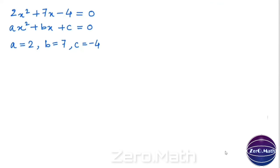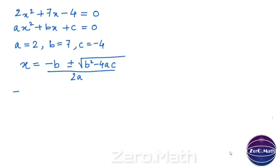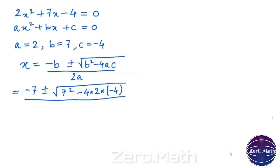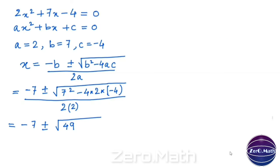Now, again using the quadratic formula: x equals negative b plus or minus root over b squared minus 4ac, divided by 2a. Putting all the values: instead of b we have 7, so we take negative 7, plus or minus root over 7 squared minus 4 times a times c. The value of a is 2 and the value of c is negative 4, divided by 2 times a. Since a is 2, we substitute a equals 2. So we get: negative 7 plus or minus root over 49, and here 4 times 2 is 8, and 8 times 4 is 32, so it becomes positive 32, divided by 4.